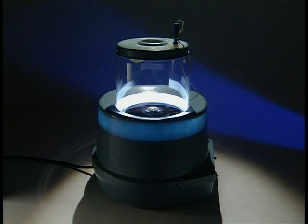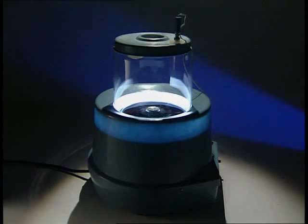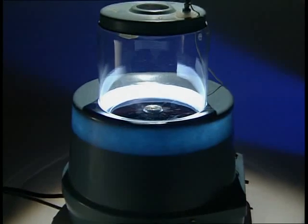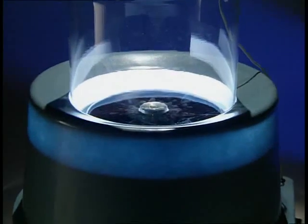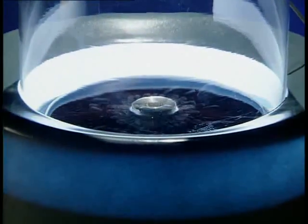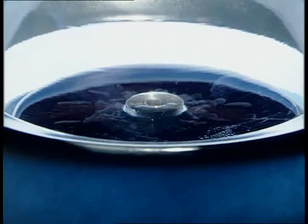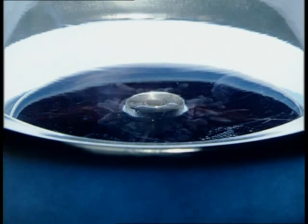A cloud chamber also makes the effect of some nuclear radiation visible. The chamber contains air saturated with alcohol vapour. The metal disc in the middle is a radioactive alpha source. As the radiation shoots through the alcohol, it leaves behind a vapour trail.